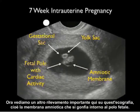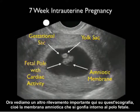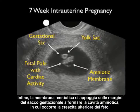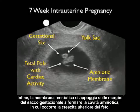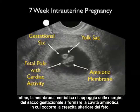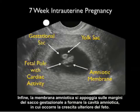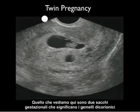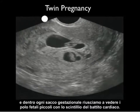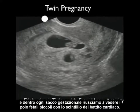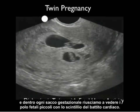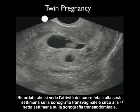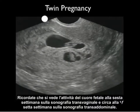An important finding here is the amniotic membrane billowing out from around the fetal pole. Eventually the amniotic membrane will plaster down on the margins of the gestational sac to form the amniotic cavity in which further fetal growth will occur. Here's an interesting video clip showing a twin pregnancy — two gestational sacs signifying dichorionic twins, each containing little fetal poles with a flicker of heartbeats. Fetal heart activity is seen at about 6 weeks on transvaginal sonography and about 7 weeks on transabdominal sonography.